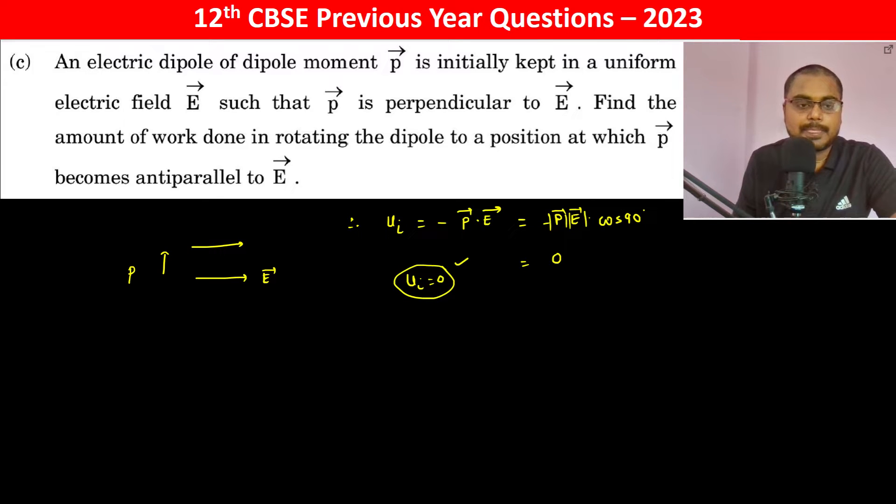Now, in rotating the dipole to a position at which P becomes antiparallel to E, this is P and this is E. Therefore, U final is equal to minus P dot E.